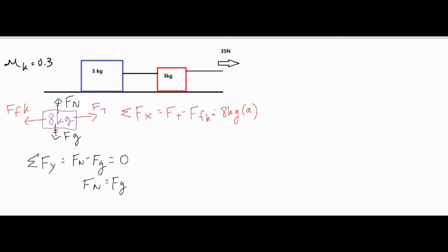In the y direction we don't have quite as much to look at because we have no movement or acceleration in the vertical direction. So we have the normal force minus the force of gravity equals m times a, which equals zero. So Fn would equal Fg if you added Fg to both sides.